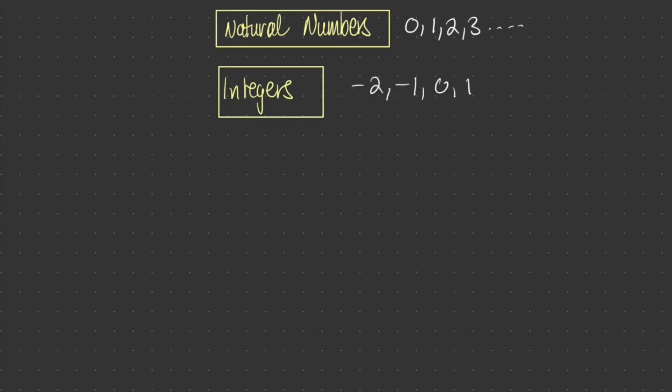To start off, let's look at where complex numbers fall in the domain of numbers. So we have natural numbers, these are your zeros, ones, twos, threes and so on. We also have integers. These also include negative numbers, so negative two, negative one, zero, one and so on.